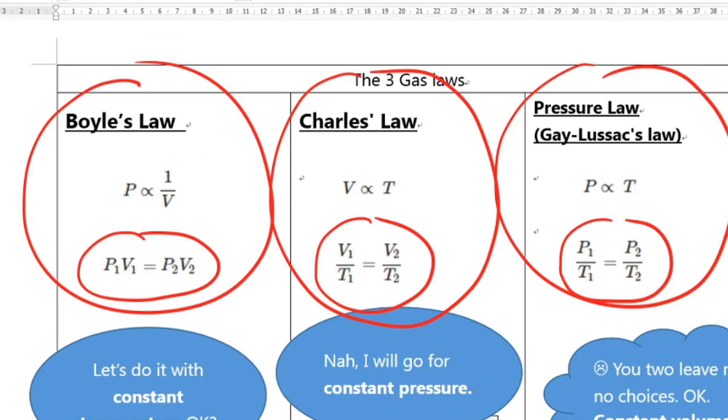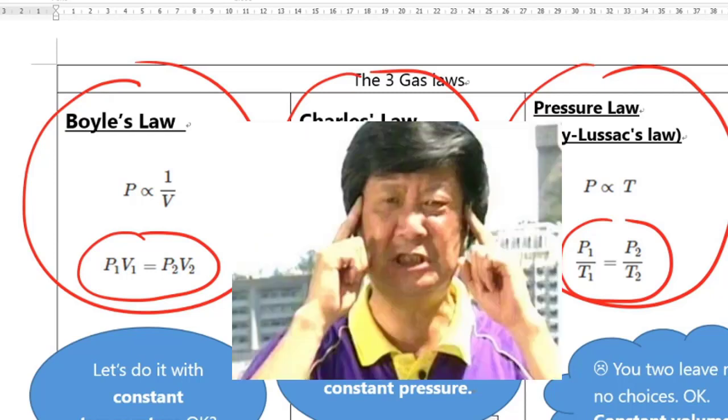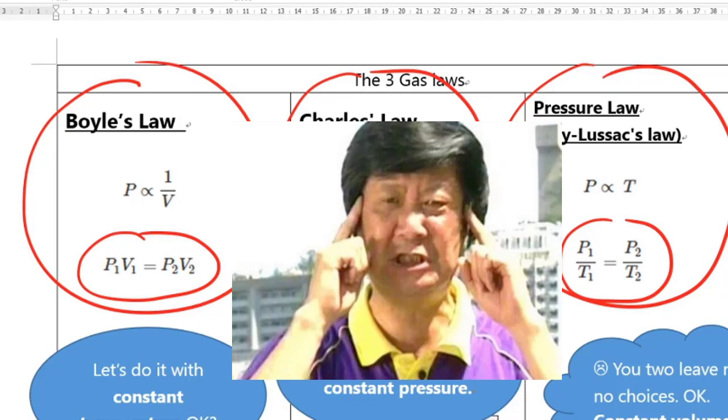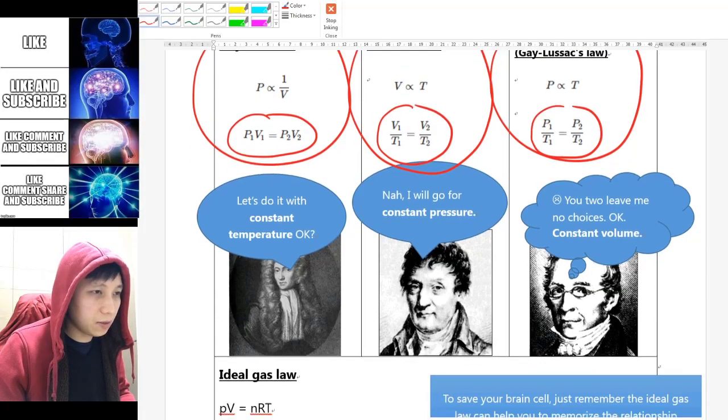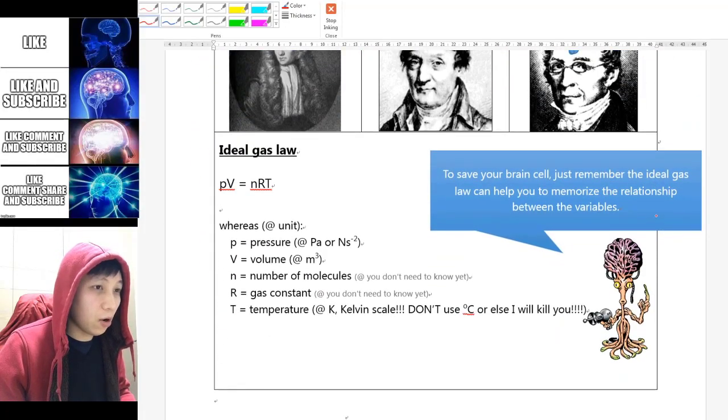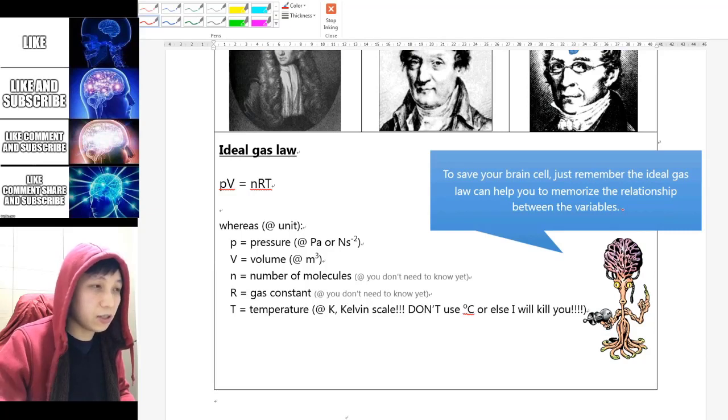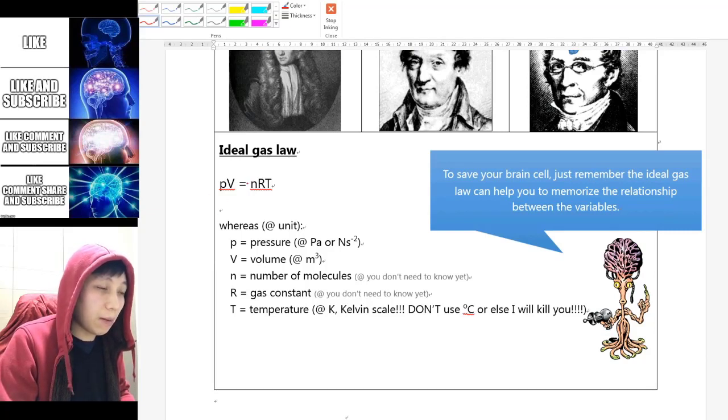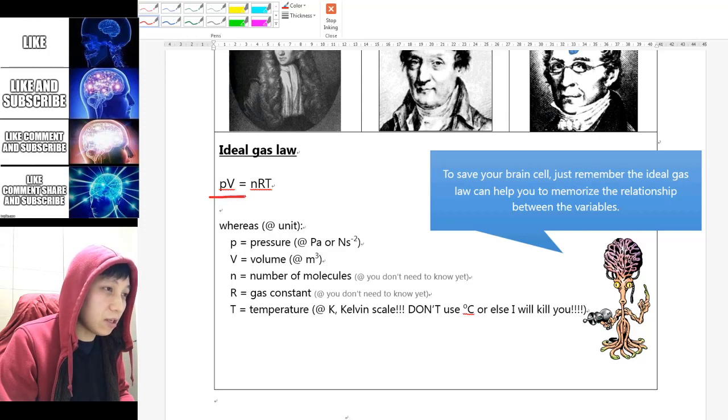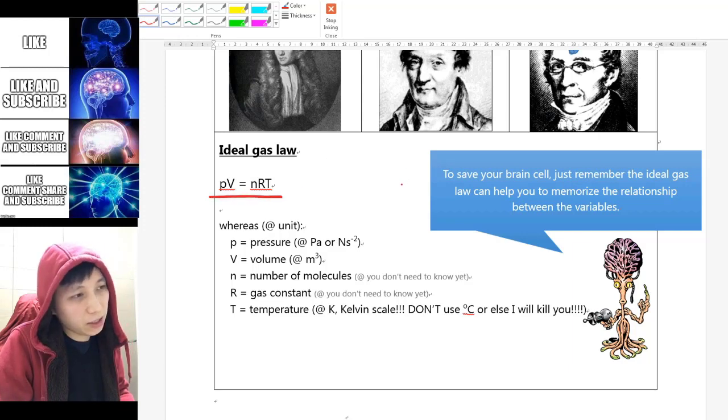Look at this equation. My brain was overloaded. I spent all my brain cells to memorize this, yet I cannot memorize them properly. In the fourth lesson, my teacher told me, oh, actually there is an equation combining all these three, and this is called the ideal gas law. PV equals to nRT.